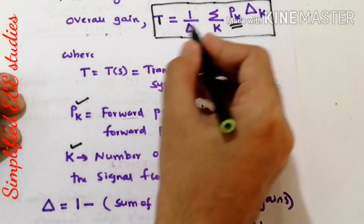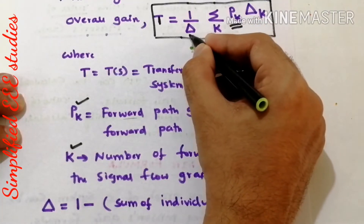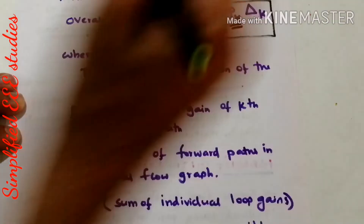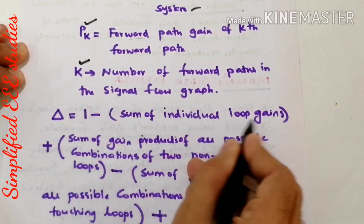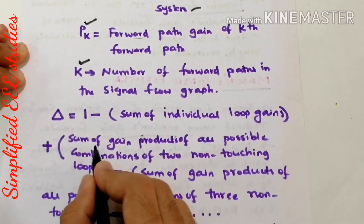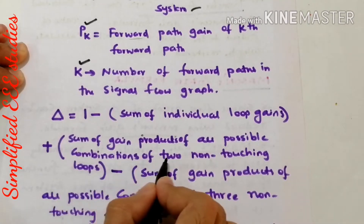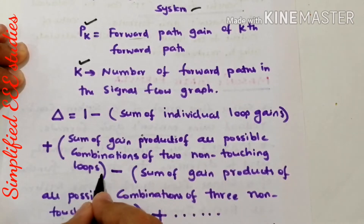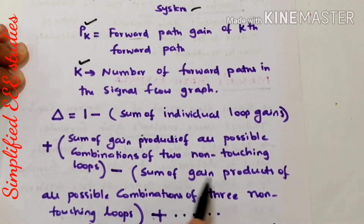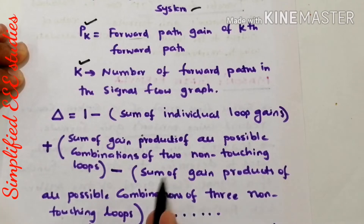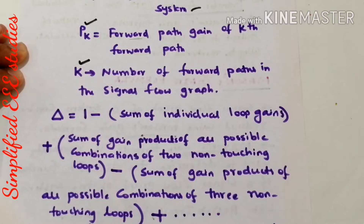Now what is delta here? Delta is equal to 1 minus sum of individual loop gains, plus sum of gain products of all possible combinations of two non-touching loops, minus sum of gain products of all possible combinations of three non-touching loops, plus sum of gain products of all possible combinations of four non-touching loops, minus sum of gain products of all possible combinations of five non-touching loops, and so on.